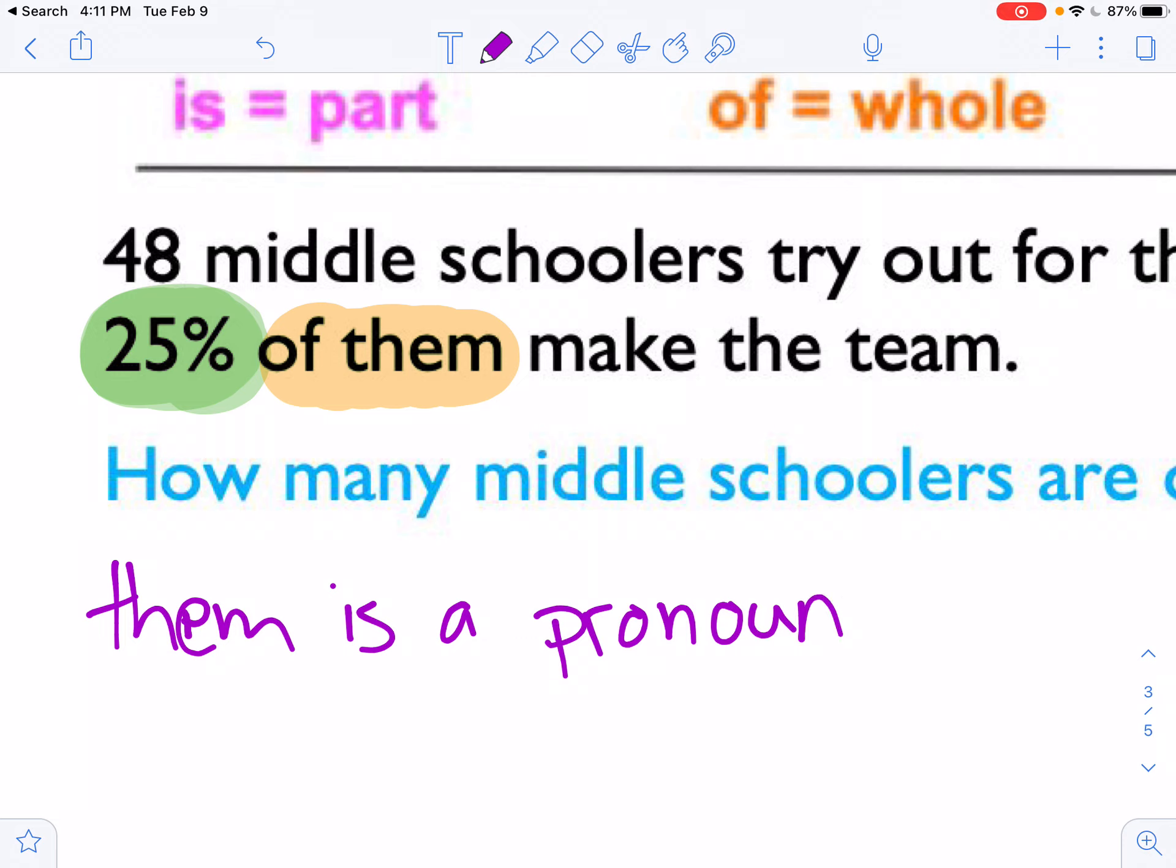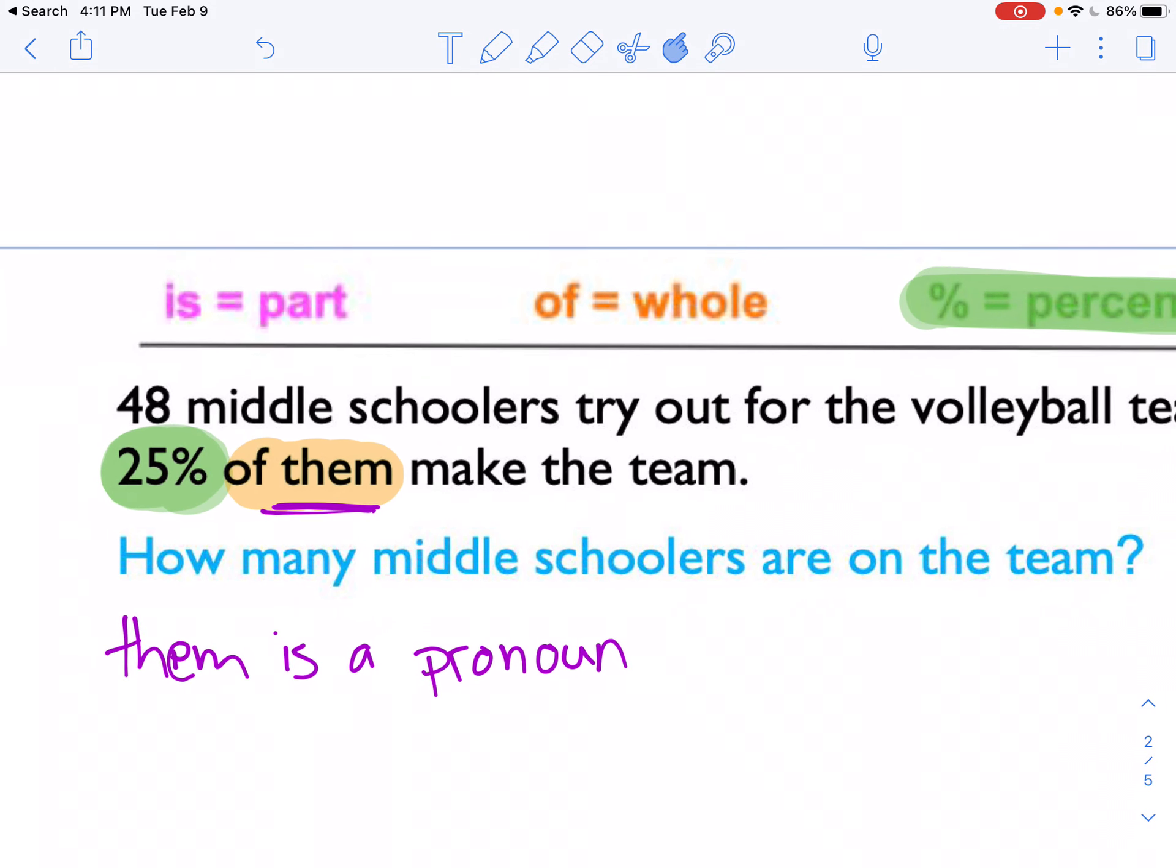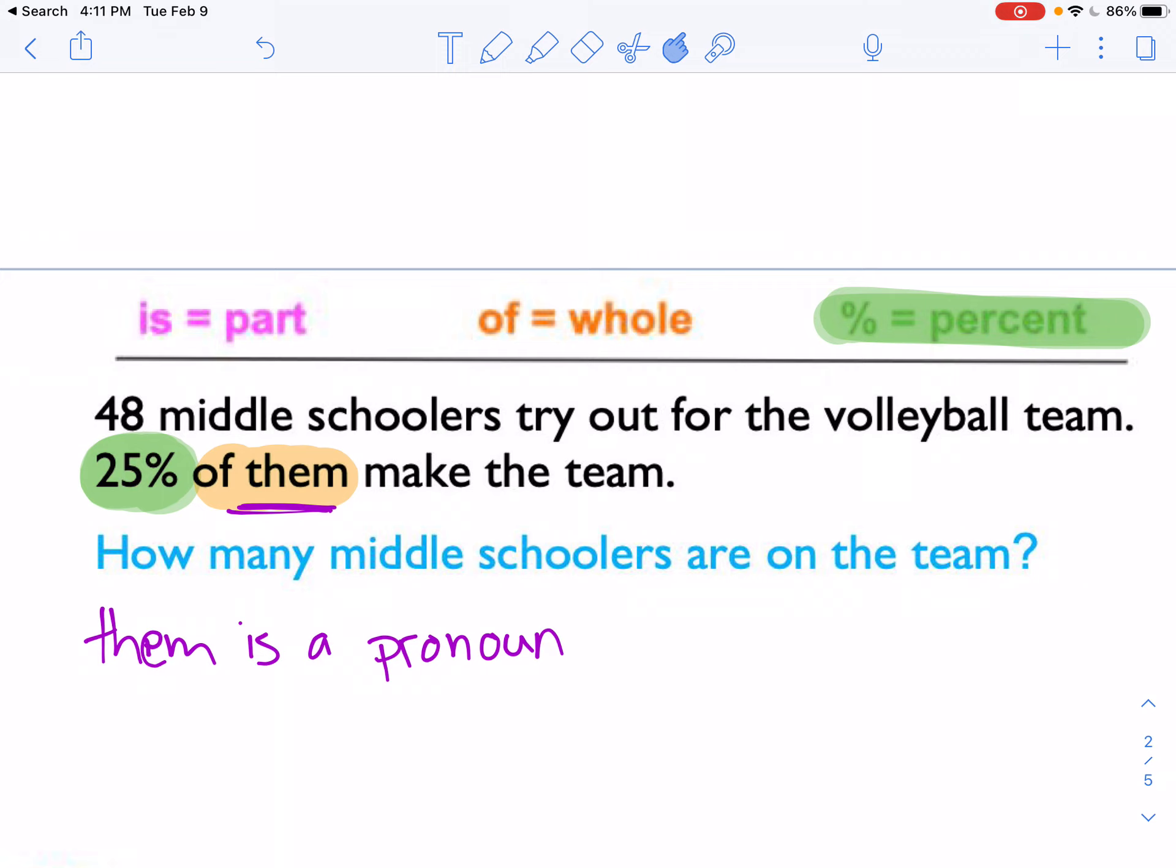It stands for something that they've already talked about. So them doesn't mean anything by itself. If I said, look at them, you wouldn't know who or what I was talking about. But because the them in this problem comes in the second sentence, it refers back to the subject of the first sentence. So if I look back at the first sentence, what I need to ask myself is, who is this about?